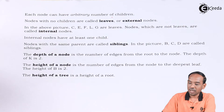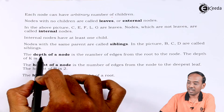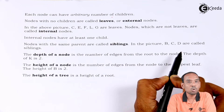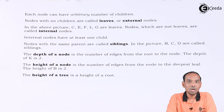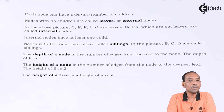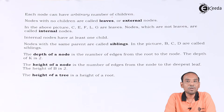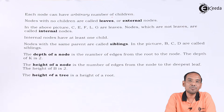The depth of the node is the number of edges from the root to that node. All the nodes are arranged at different levels, and the number of edges from root to a given node defines the depth of that particular node.